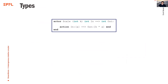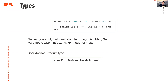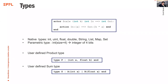Ports can have types. The language provides native types like integer, signed integers, floating point, double precision, string, list, maps, and sets. We can parameterize integer types — int(size=4) defines a 4-bit integer. The user can also define product types, which are like structures — for example, type P is a product of an integer and a floating point. We can also define sum types, which allow pattern matching inside actions.